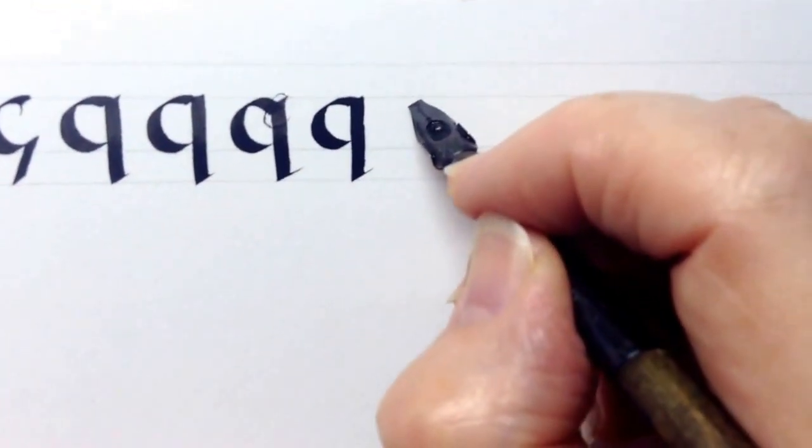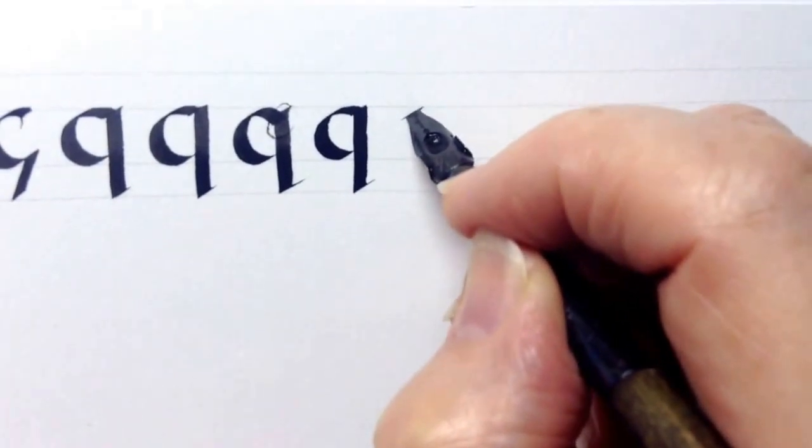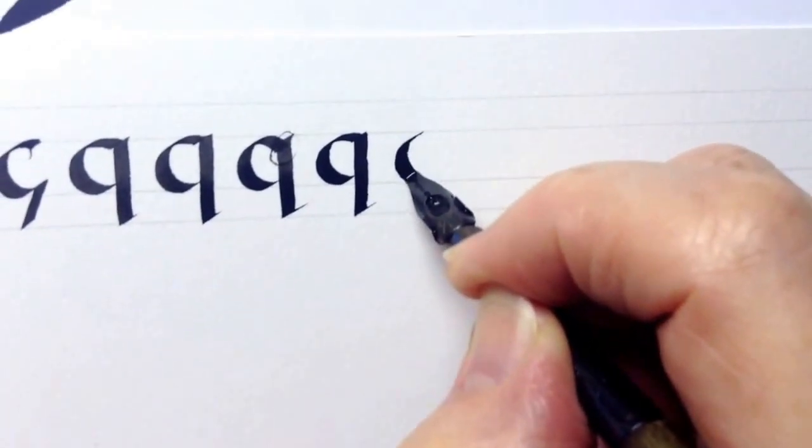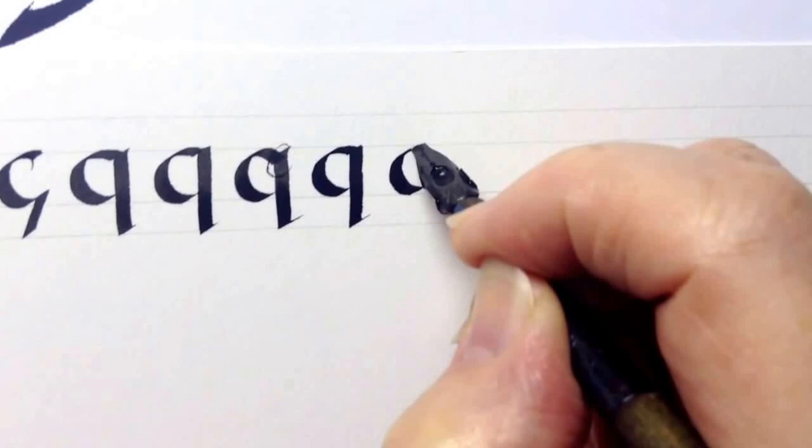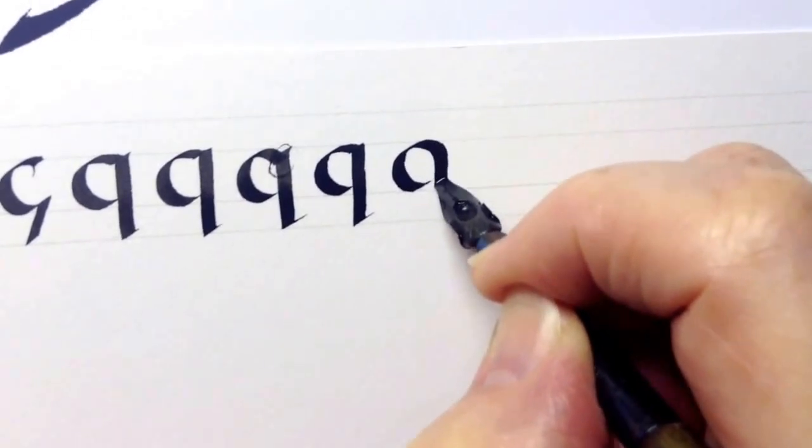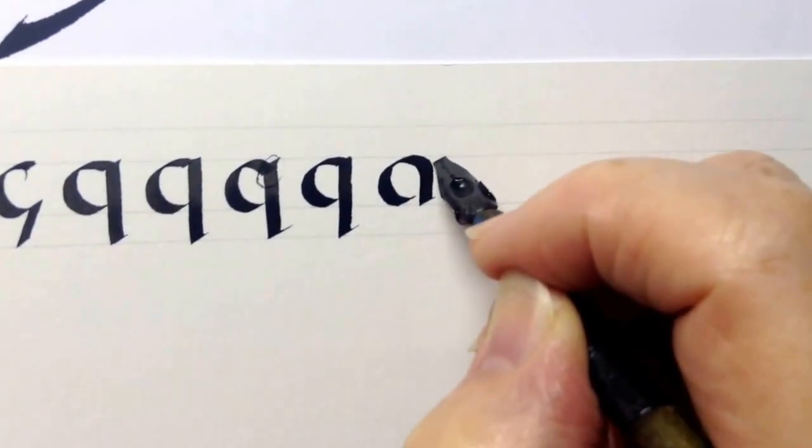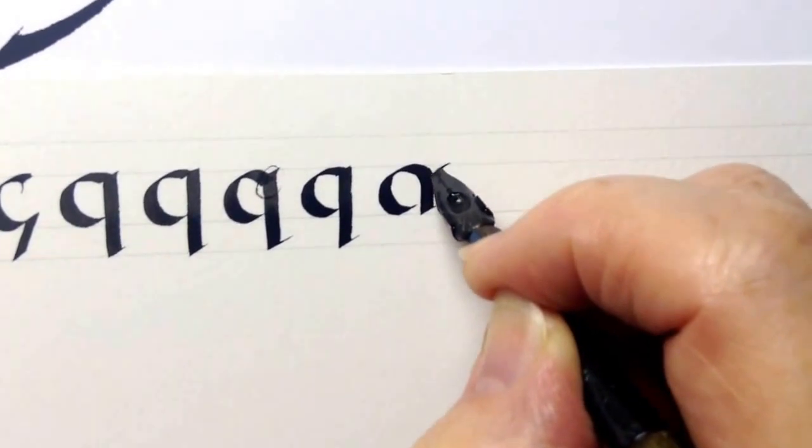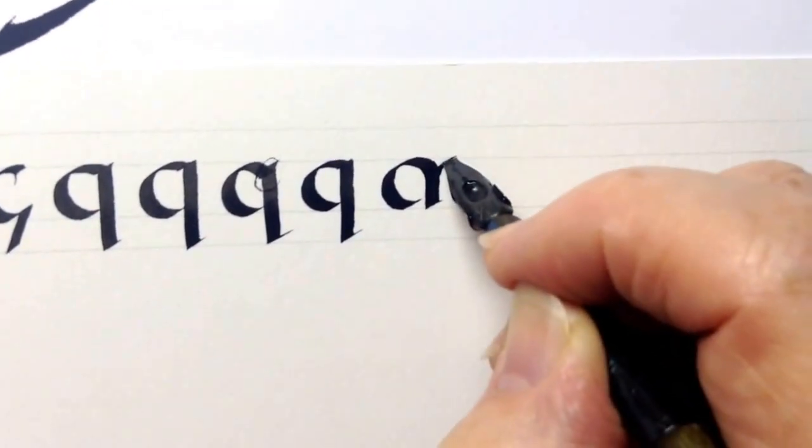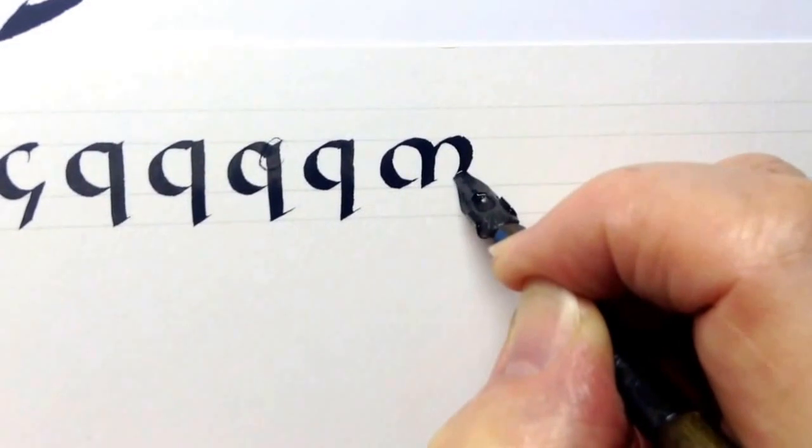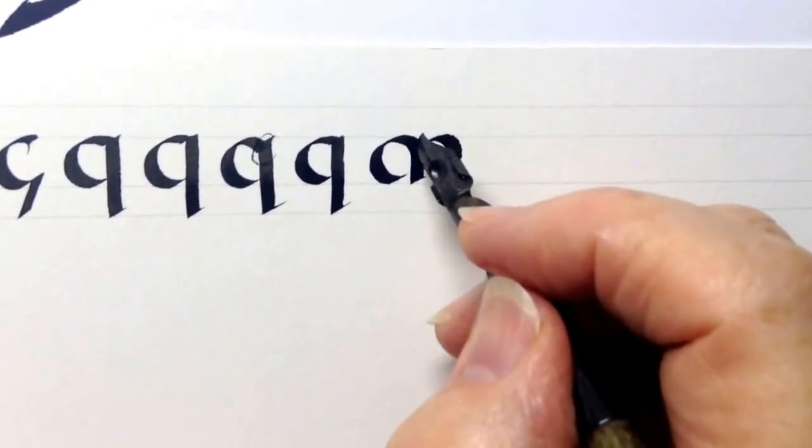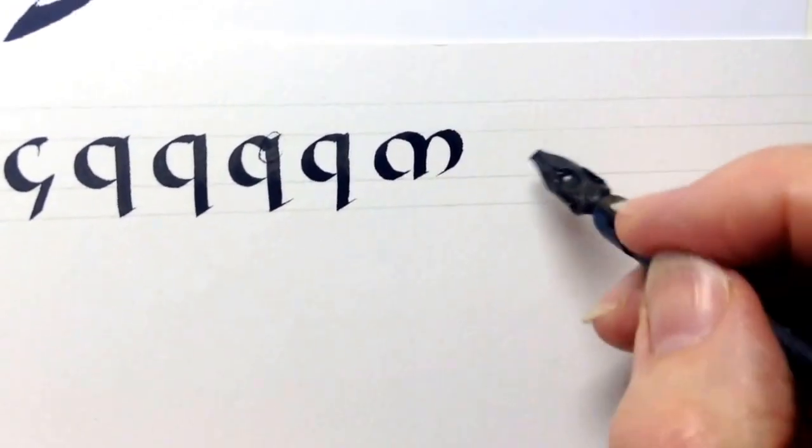The letter M starts like you would letter C, very round. Now the down stroke. And with the letter M I like to do a stroke backwards and I'll show you why before I do this, because I do like that slight thickening there.